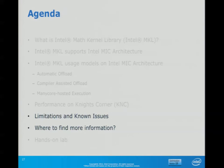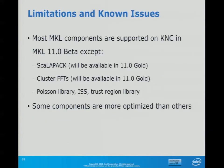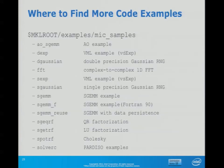Some of the limitations and issues are already resolved. Most MKL components are supported on KNC, sometimes just at the baseline compiled level. Excluded items are ScaLAPACK, cluster FFT, and the Poisson library. To summarize, the MPI-related functionality isn't fully there yet — it just needs more time. If you have the beta stack installed, you can access examples in the MKL root directory, and on the local nodes you can pick up additional examples of these execution modes.